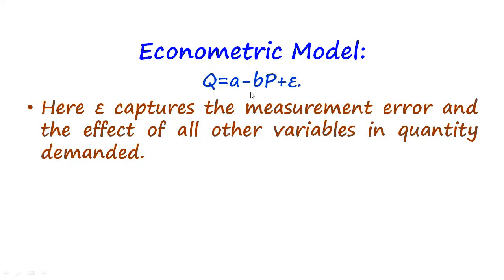The basic econometric model follows the example of the law of demand. It considers that the quantity demanded of a commodity is not only affected by its price but also by many other variables, which are included in the error term. So it is specified that Q depends on P and other terms that are clubbed together in the error term.